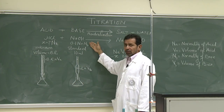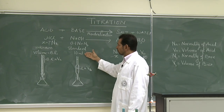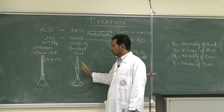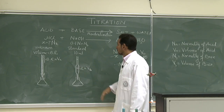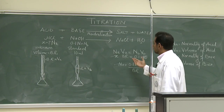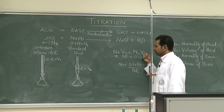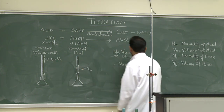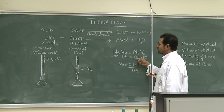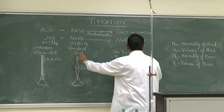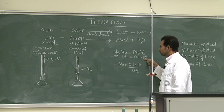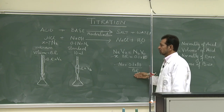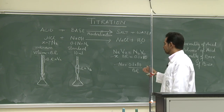The concentration of the base is given as 0.1, and the volume of the base is kept the same because we are taking the volume through the pipette — that is 10 ml. We use the formula NA·VA = NB·VB. NA is unknown, VA is the burette reading, NB is the normality of the base which is 0.1, and VB is the volume of the base which is 10 ml. We solve this equation to determine the concentration of the acid.